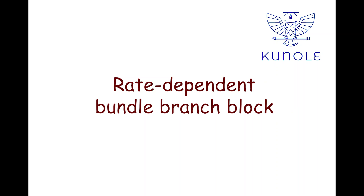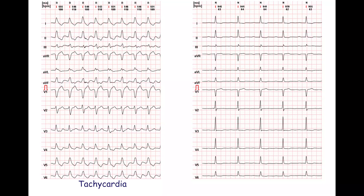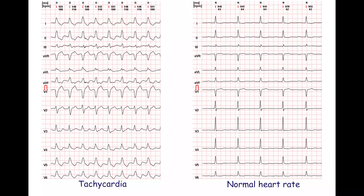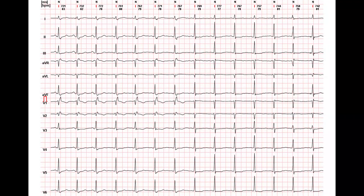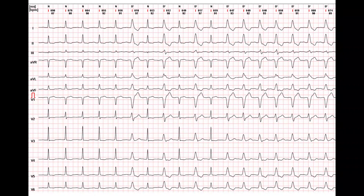In this video, we will talk about rate-dependent bundle branch block. Left or right bundle branch block sometimes occurs only at a high heart rate. The rate at which the block occurs varies from person to person. However, the heart rate at which the block appears is higher than the heart rate at which it disappears. For example, right bundle branch block occurs at a rate of about 85 BPM, but disappears at a heart rate below 78 BPM. A similar pattern may be seen in left bundle branch block.